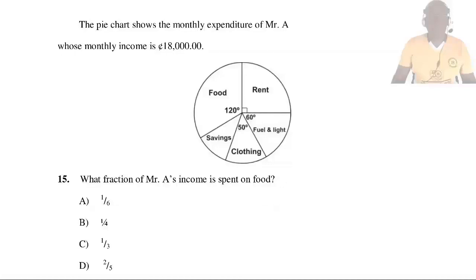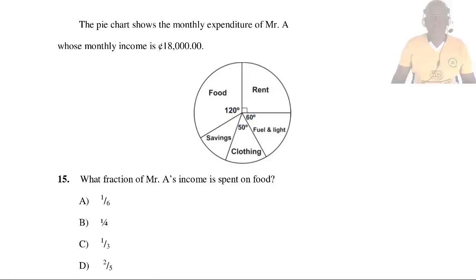The pie chart shows the monthly expenditure of Mr. A, whose monthly income is 18,000 cedis. Question 15: What fraction of Mr. A's income is spent on food? From the pie chart, food has an angle of 120 degrees. The fraction = 120/360 = 1/3. So the answer is C.